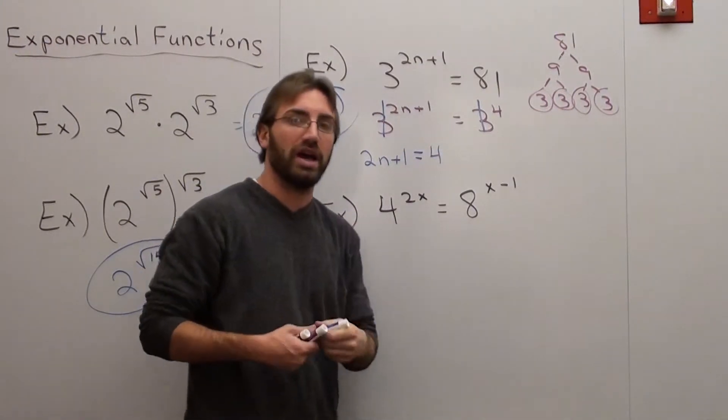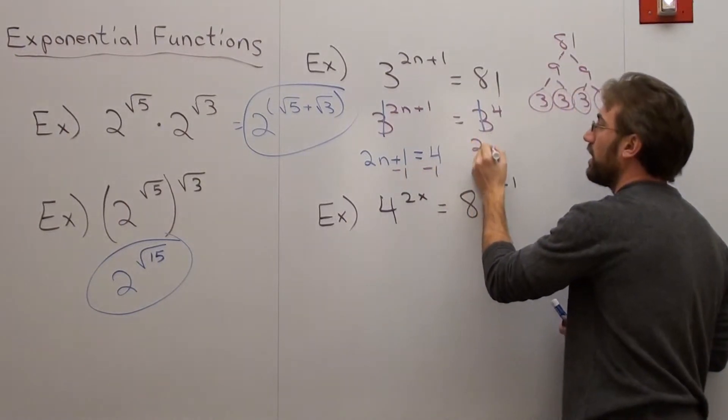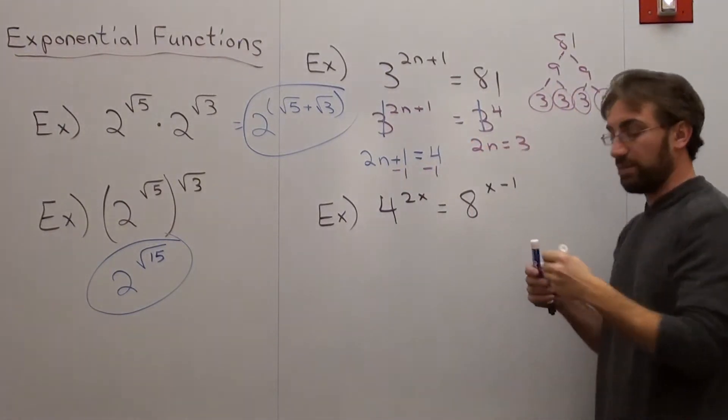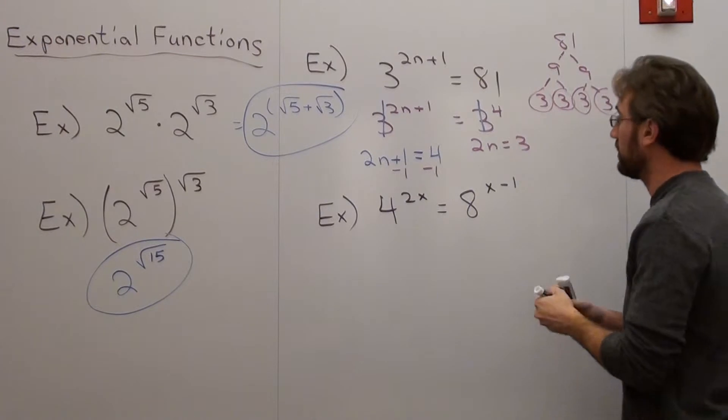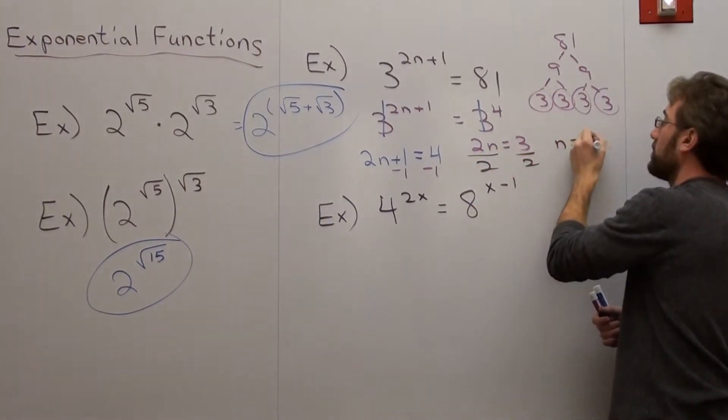And you go ahead and you simplify for n. Subtract 1, subtract 1. 2n equals 3. Divide by 2 on both sides. n equals 3 halves.